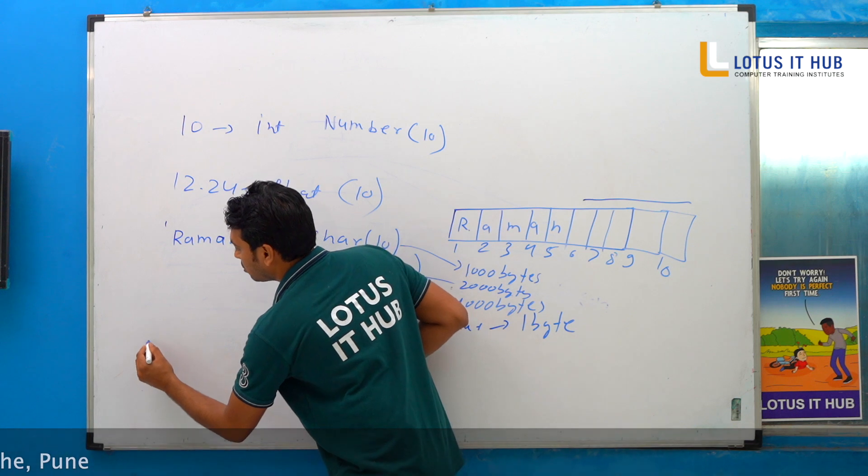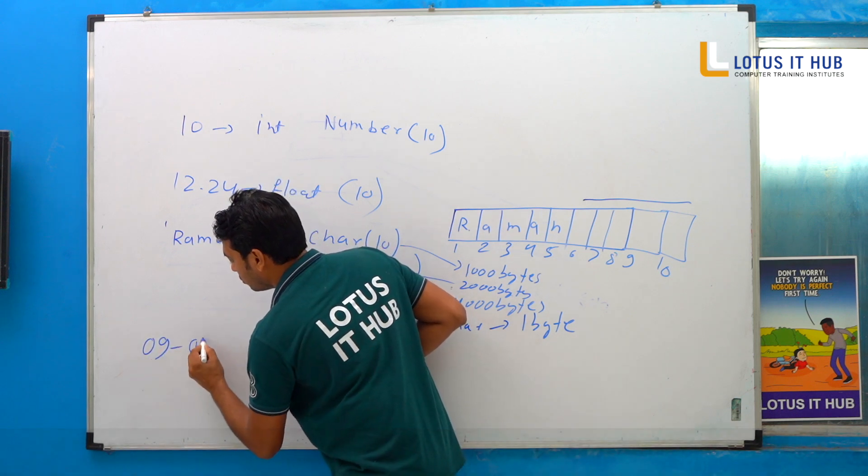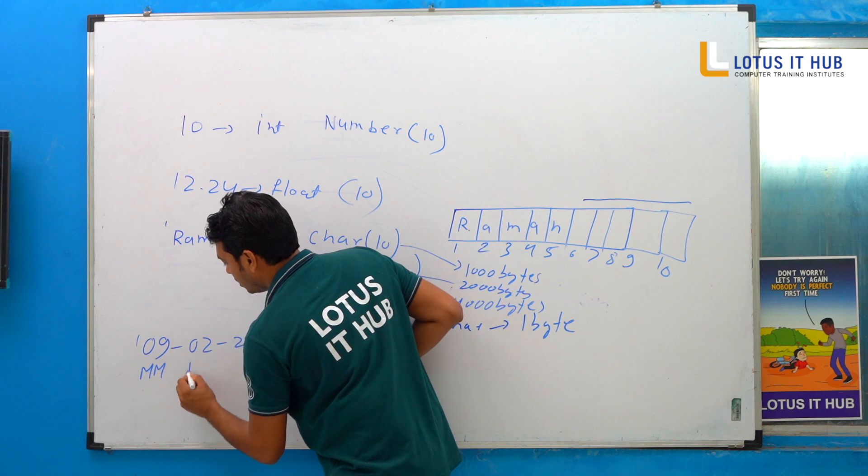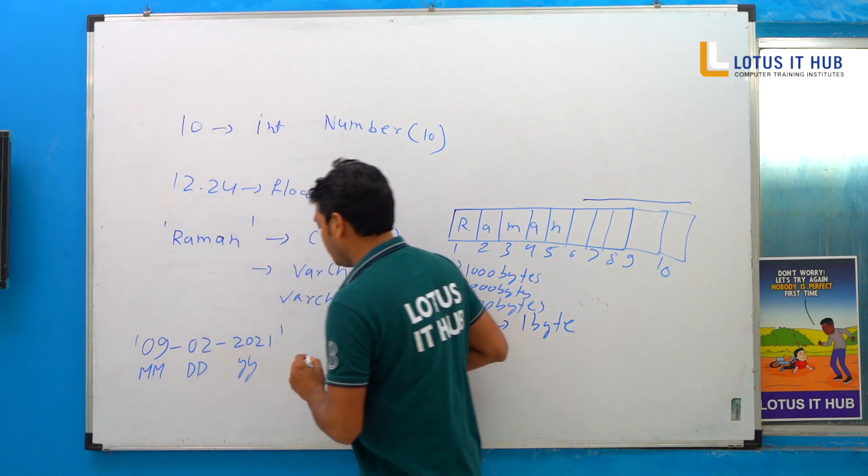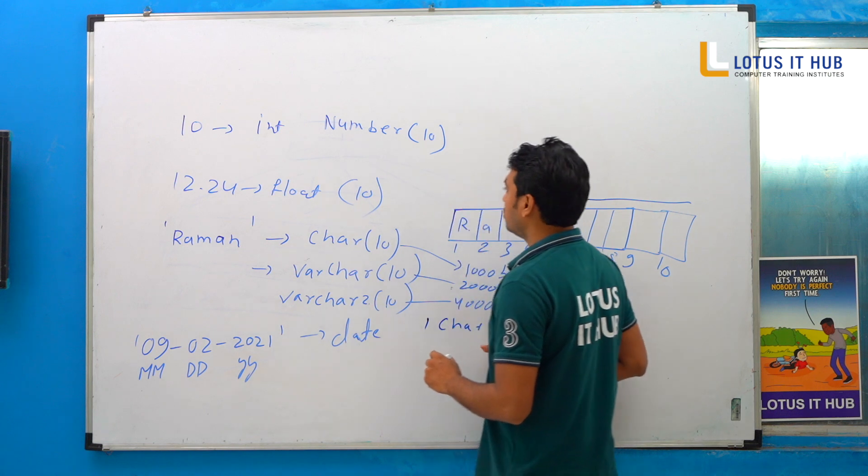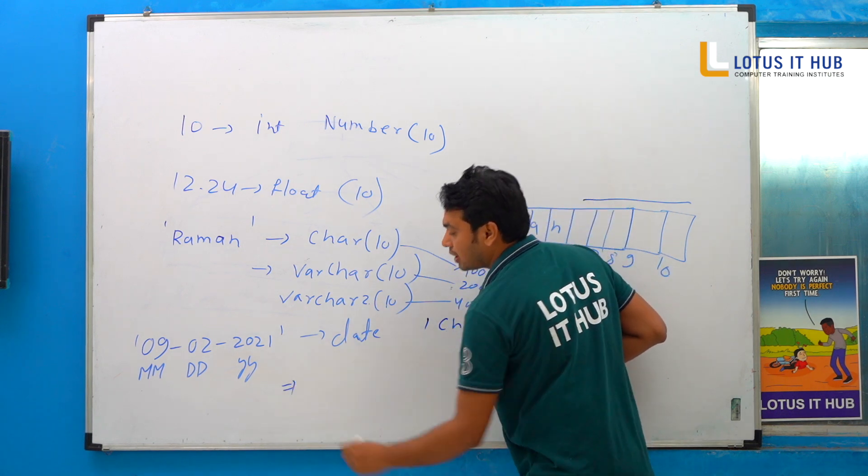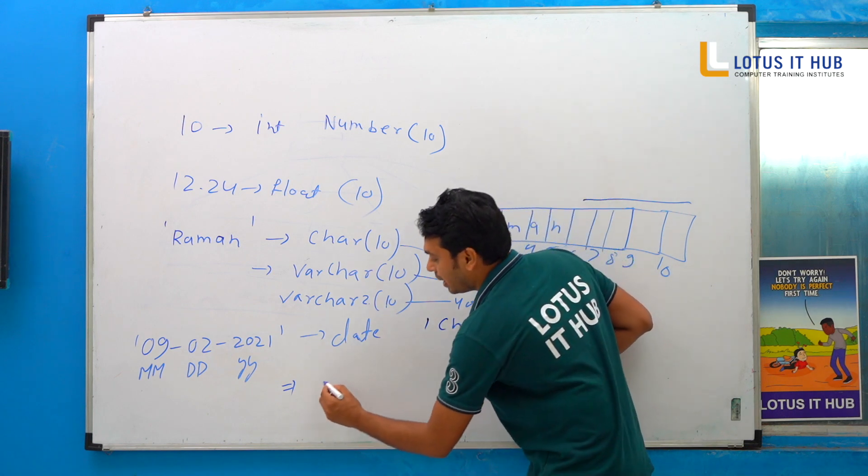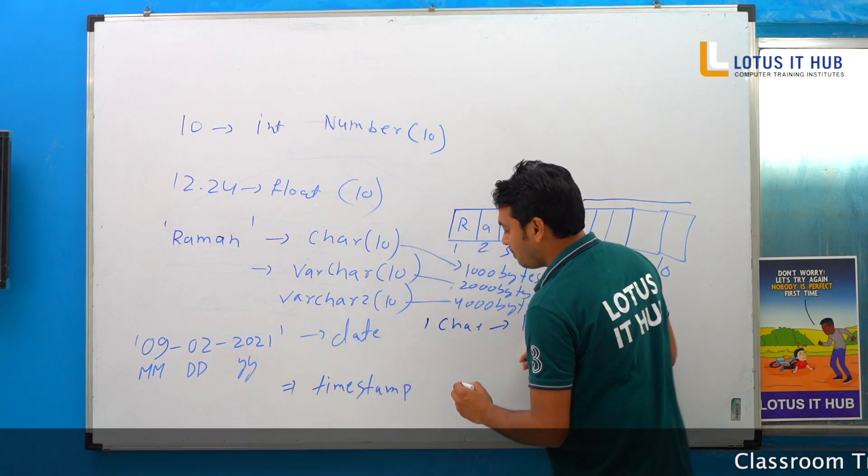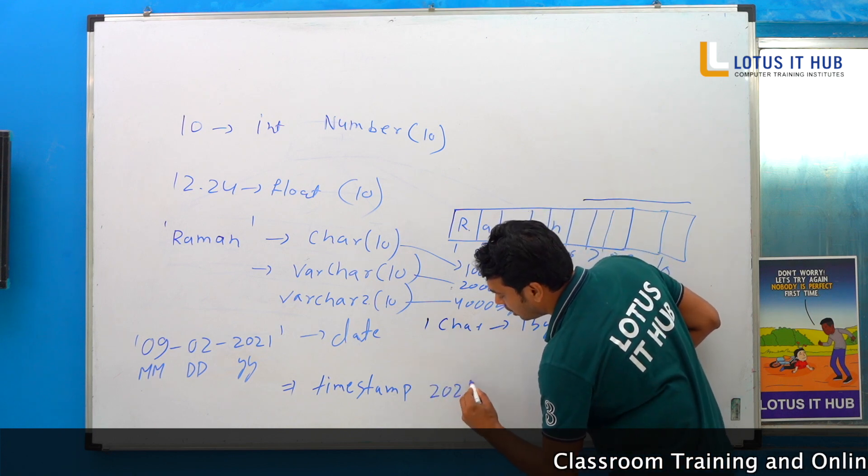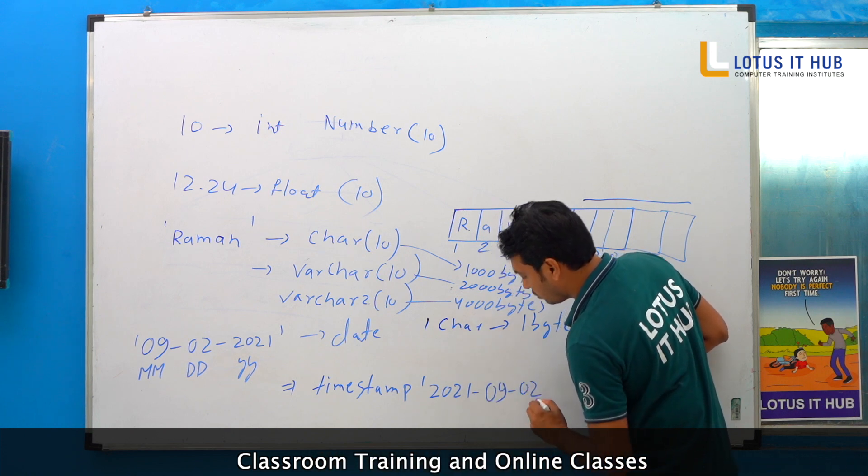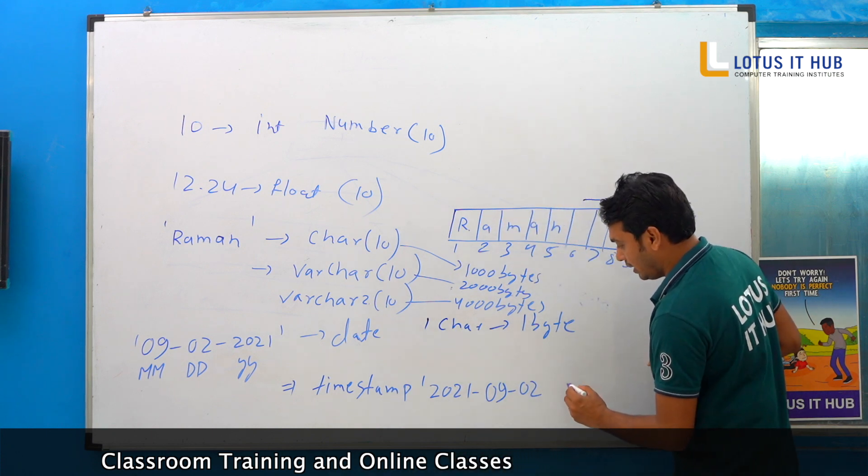Then if you start storing any date, 09-02-2001, MMDDYY, MMDDYY, date data type. Suppose I have last time ATM transaction, time stamp is a data type, correct. What is the format? 2021, that is called year, MM09, 02, and after that we have HHS.